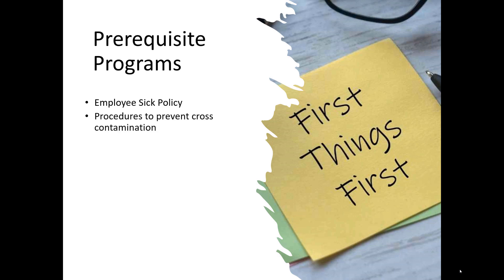You should have a cross contamination procedure. For example, if you're working in a kitchen in a restaurant, you don't want your raw meat anywhere near your cooked meat, so you should have procedures around that. There should also be personal hygiene practices — people handling food need to wash their hands regularly. If they go to the bathroom, they need to wash their hands. You need a whole procedure around that.